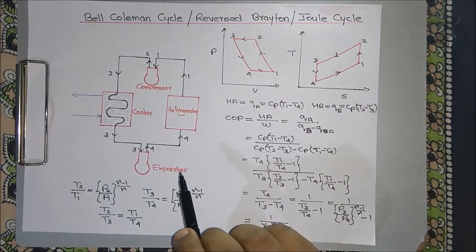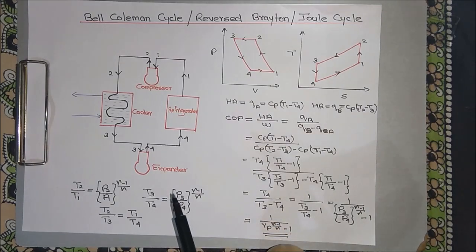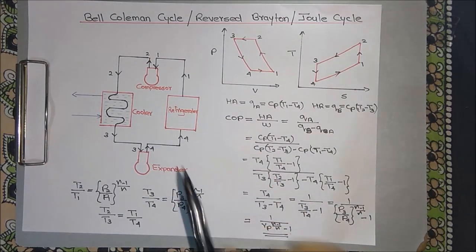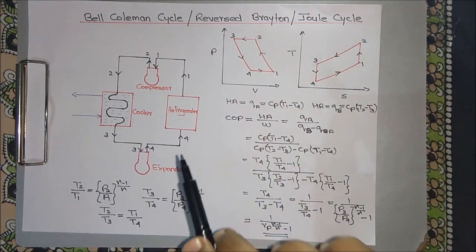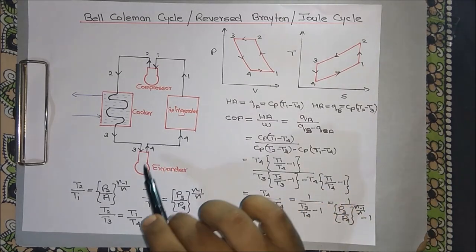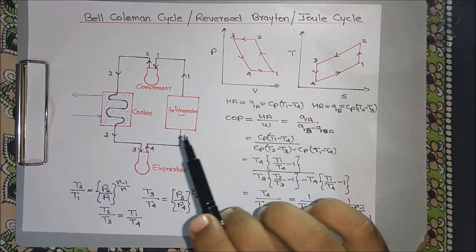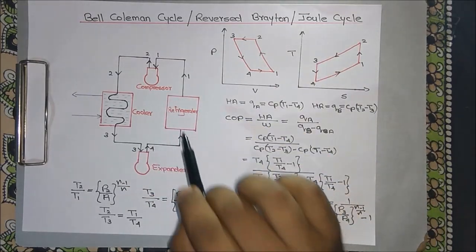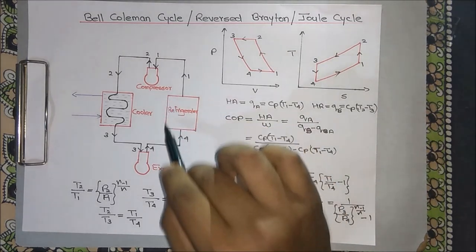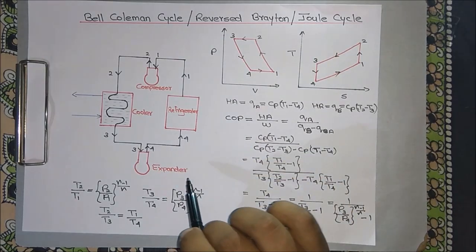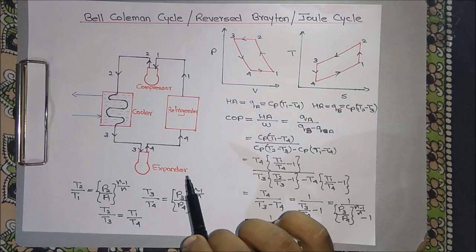First of all, there are four major components involved in a Bell-Coleman cycle: a refrigerator, a compressor, a cooler, and an expander. As the name indicates, the function of a compressor is to compress the refrigerant to a higher pressure. The function of a cooler is to cool the refrigerant to a lower temperature. The function of an expander is to expand the refrigerant to a lower pressure. The refrigerator is the chamber where we need a lower temperature — it is the chamber to be cooled.